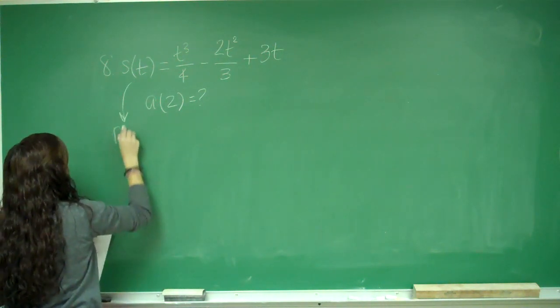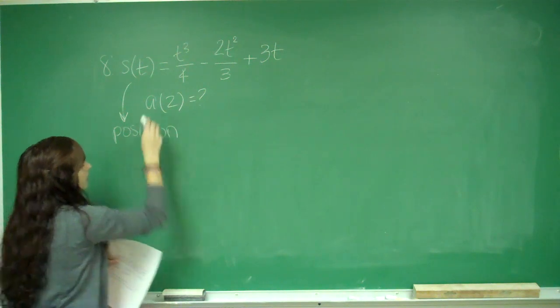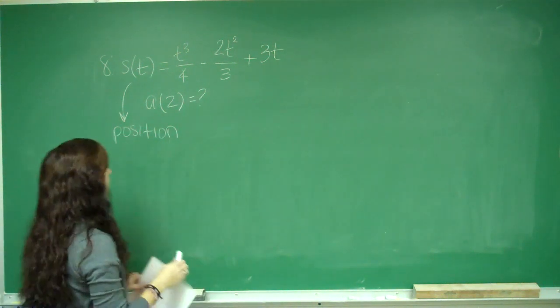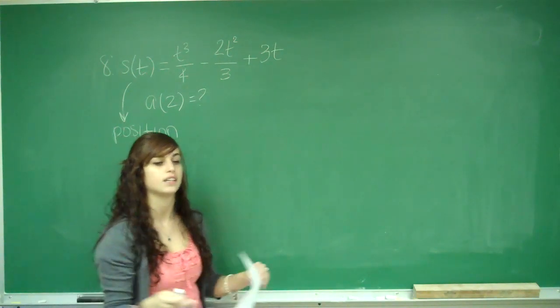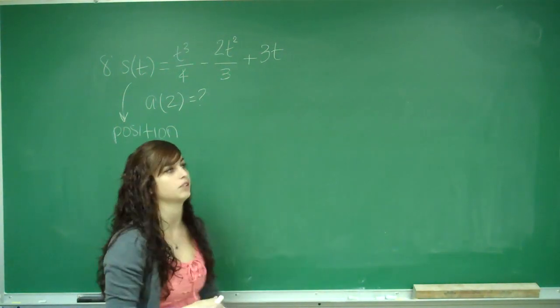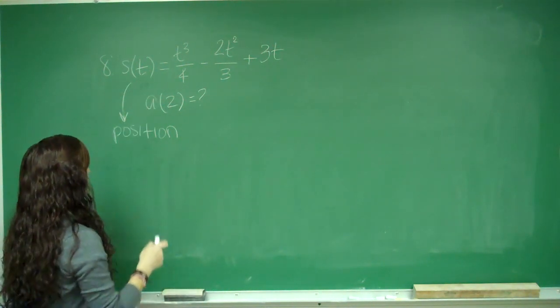This function is the position, but they want the acceleration. So we have to remember that the derivative of position is velocity, and the derivative of velocity is acceleration. So we need to find the second derivative of this function.